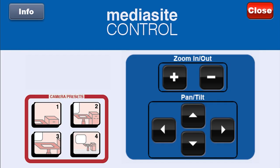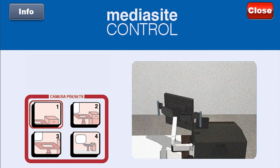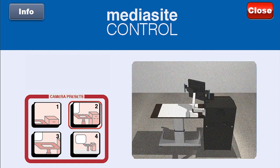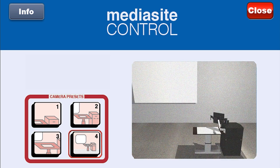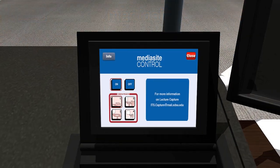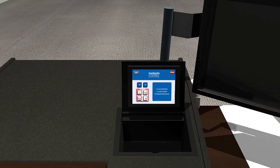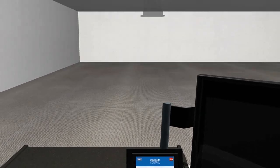The first preset is a close-up of the podium. The second is the entire podium. The third is the document camera area. And the fourth is the entire front of the classroom. Once you select your camera preset, you will see the camera on the ceiling adjust to your selected view.